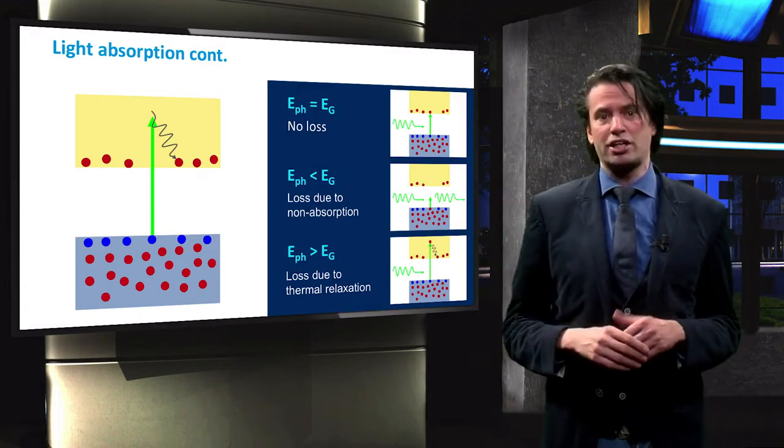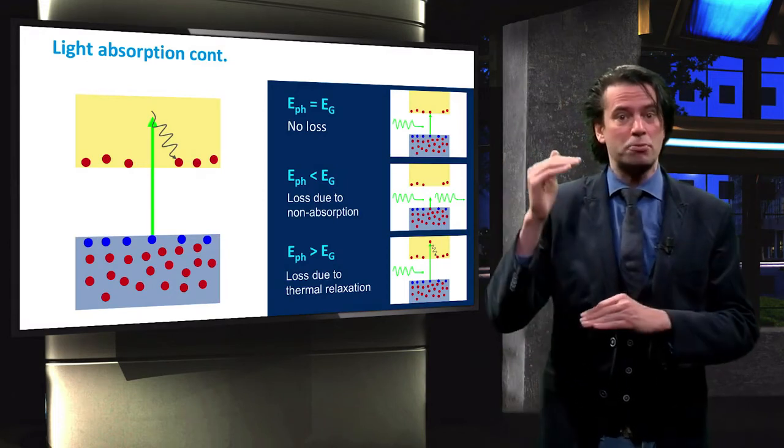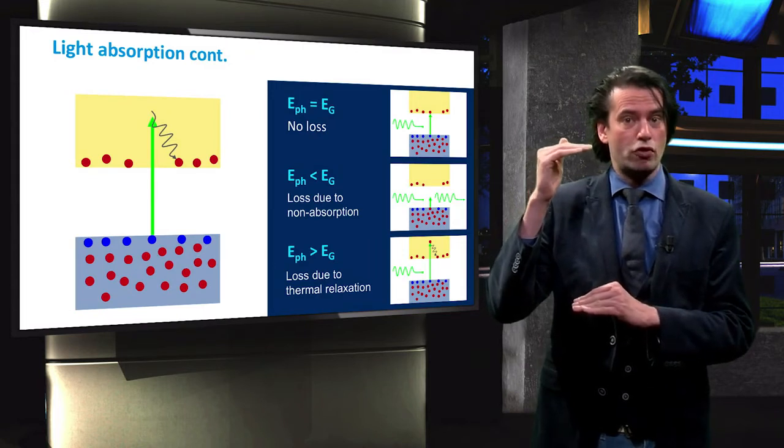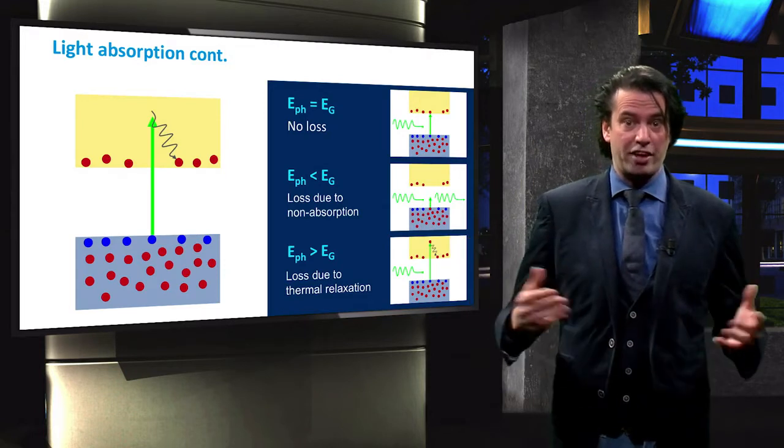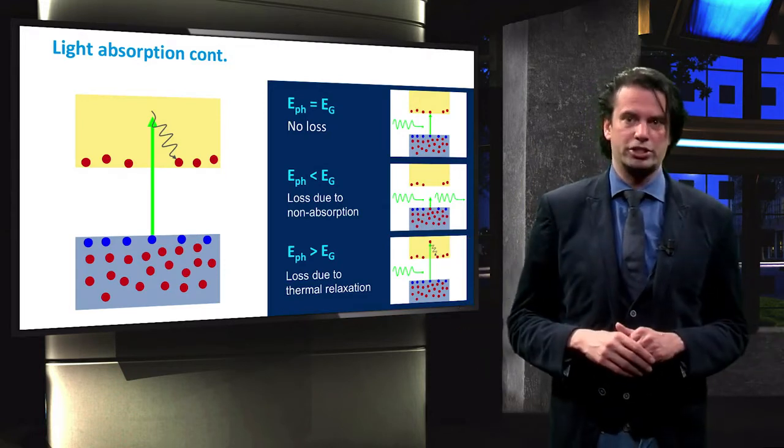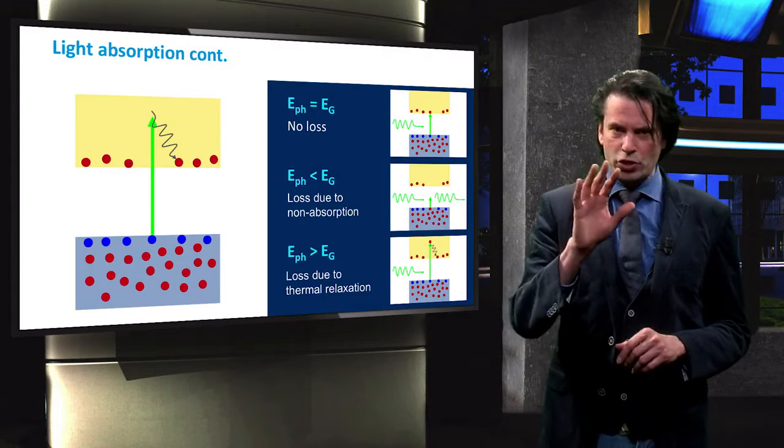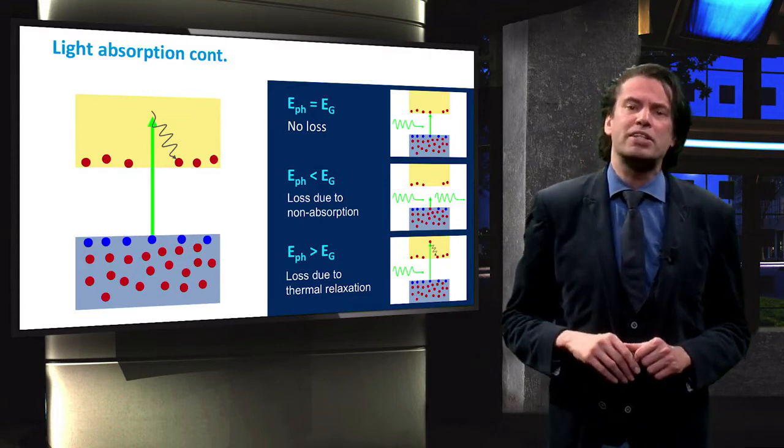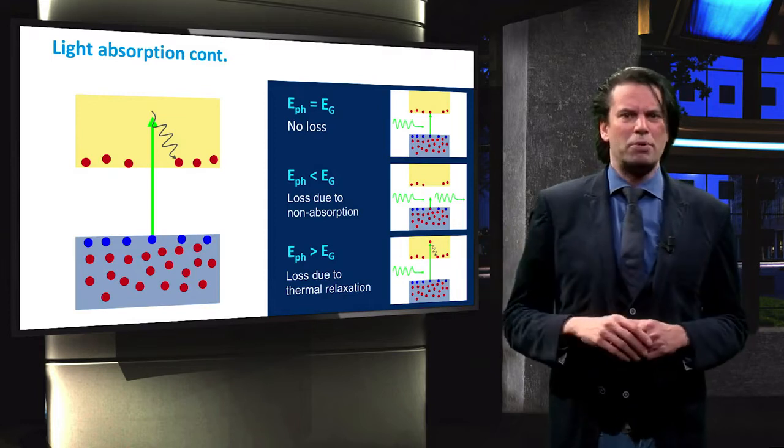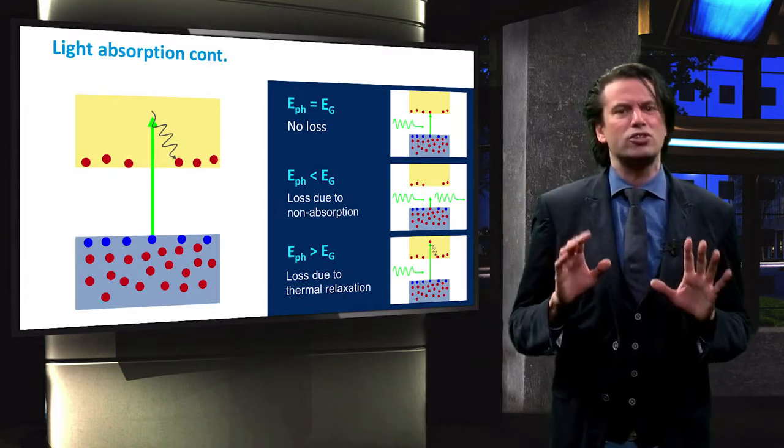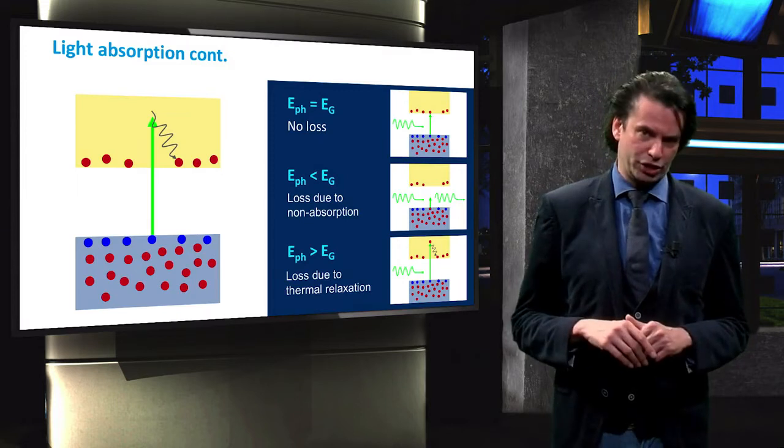then the solar cell can only utilize a maximum of 1.1 eV from that photon. 0.5 eV of the energy are therefore lost to thermalization. In later videos we will see that this is an upper limit and solar cells actually extract less than that. But this is a good way to understand the losses that occur due to thermalization.